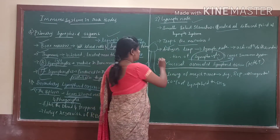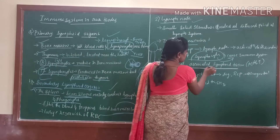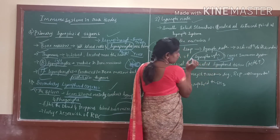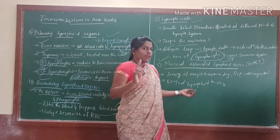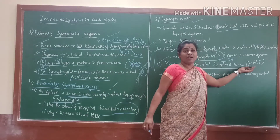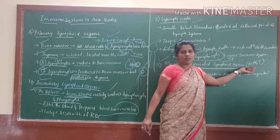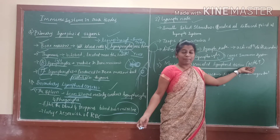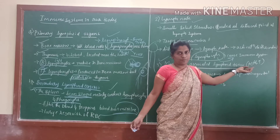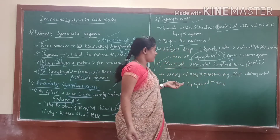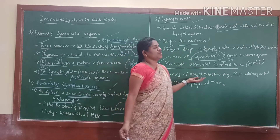And last but not the least, that is Mucosal Associated Lymphoid Tissue. This is important — define or state the abbreviation of MALT. It is a very important question. And the lining of a major tract — it is the outer lining of mucosal, respiratory, nasal tract or other.